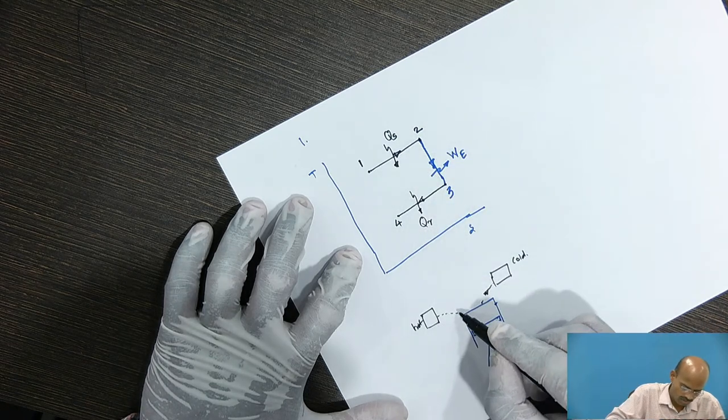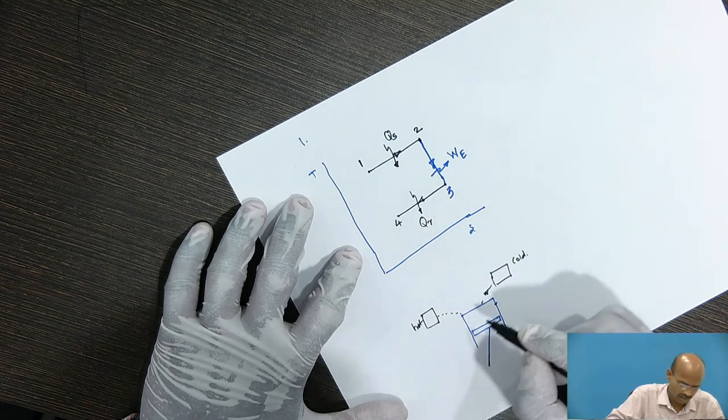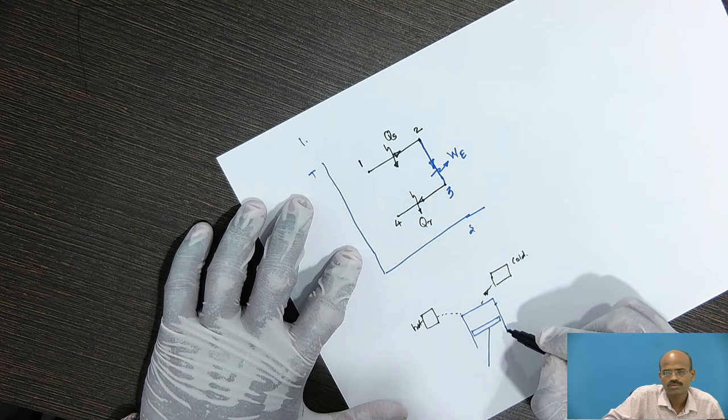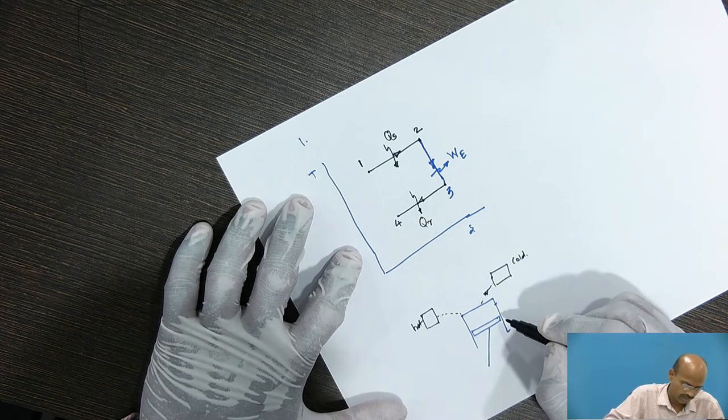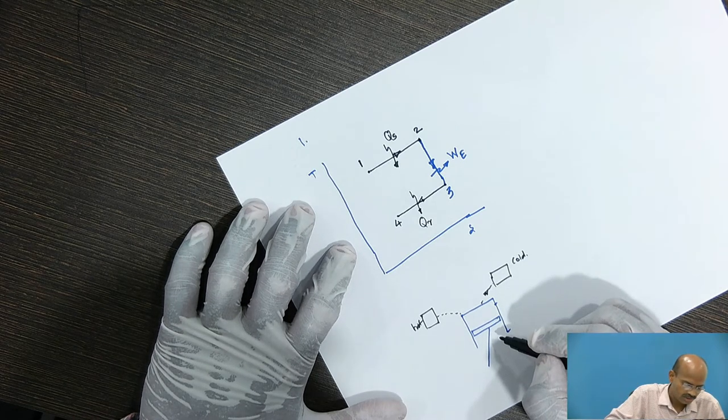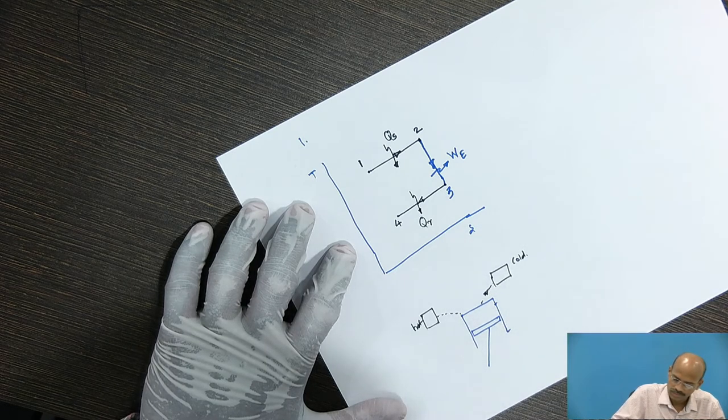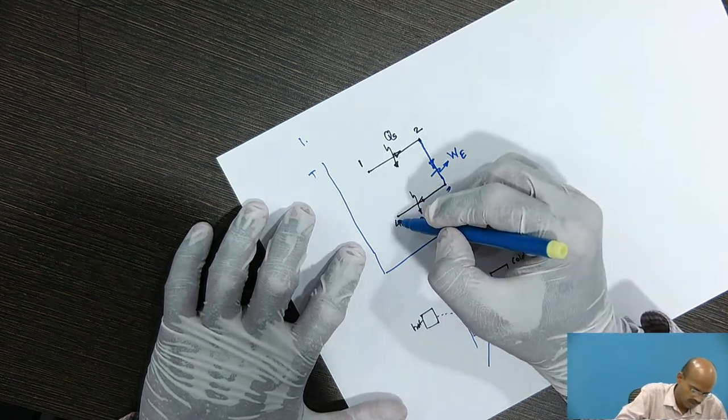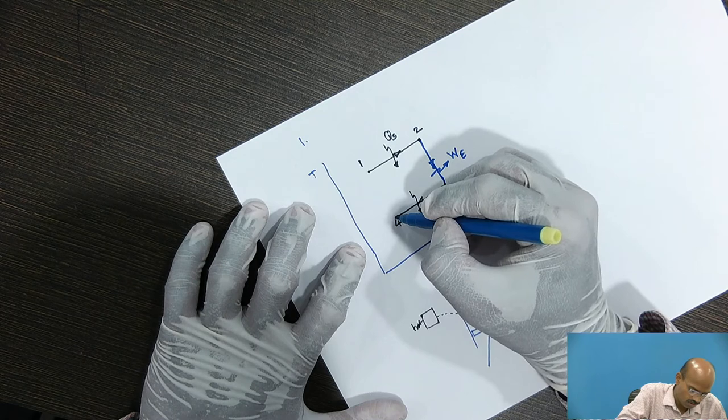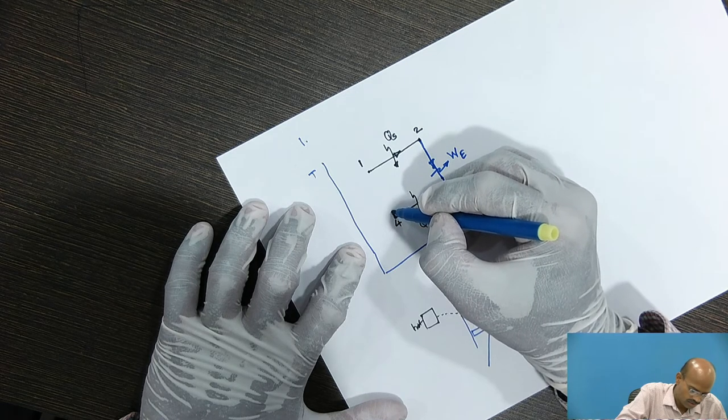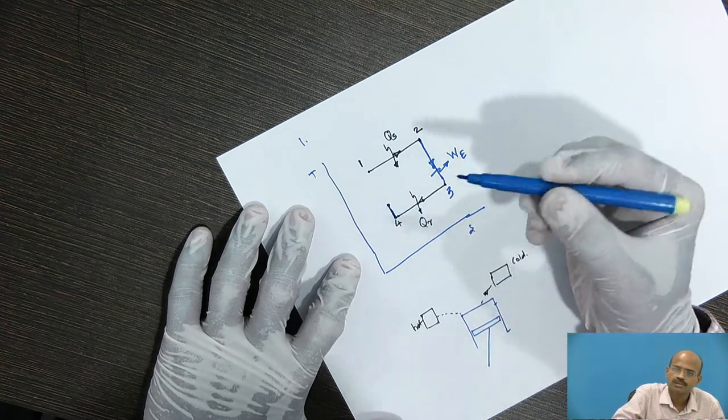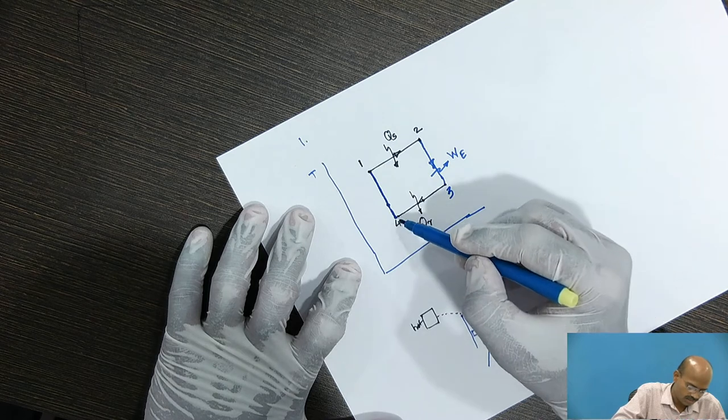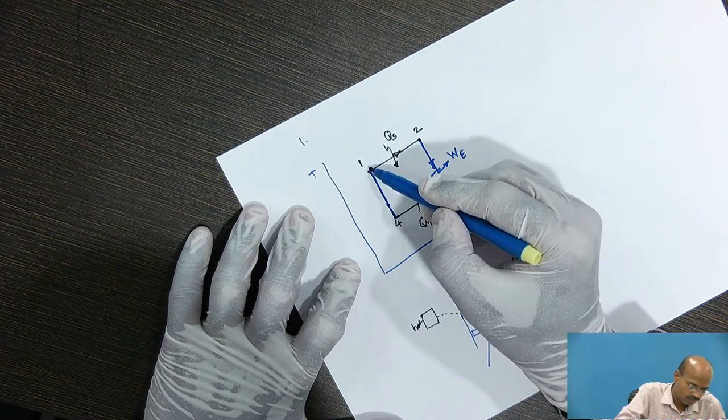For heat supplied, we brought hot body in contact with the cylinder head and during heat rejection, we will remove this hot body and we will bring this cold body in contact with the cylinder head. Now, fourth process for single phase Carnot cycle is the compression or pressurization process. During the pressurization or compression process, the piston will move from BDC to TDC and there will be rise in the pressure from 0.4 to 0.1.